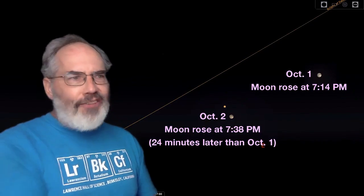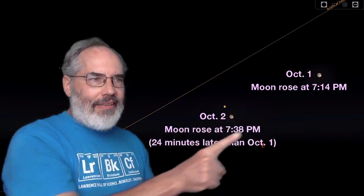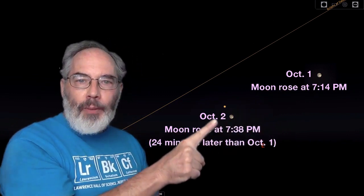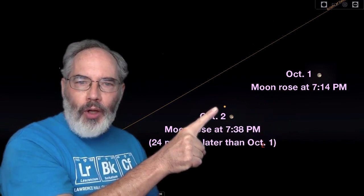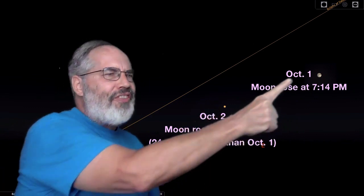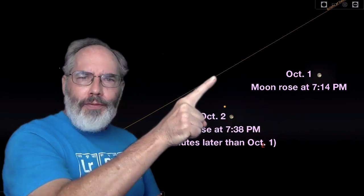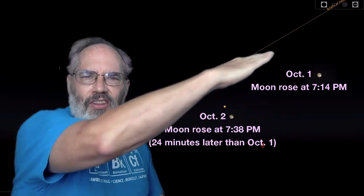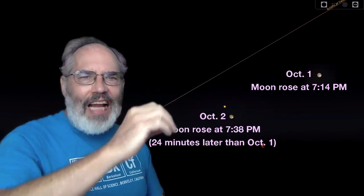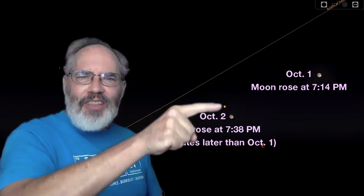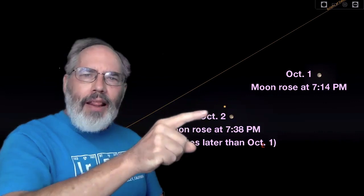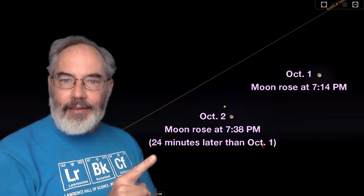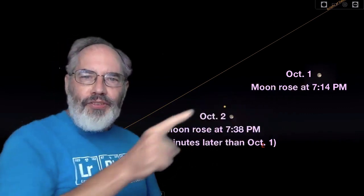Here we see the full moon in both positions as it was on the day it was full on October 1st and the next day, October 2nd, when it was close to Mars. During the course of that day, it moved over quite a lot and down a little bit, and that's because the slope of the ecliptic is fairly shallow here. Since it moved down just a little bit, the time it rises will be just a little bit later—24 minutes later than it was on the day it was full.